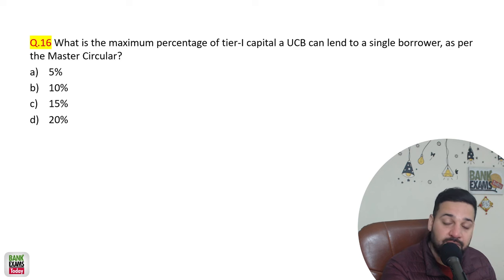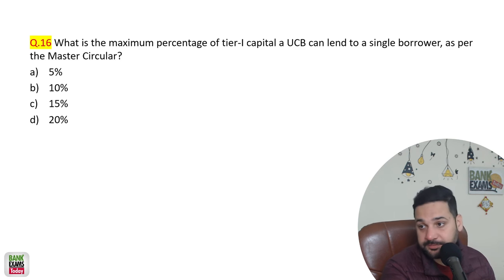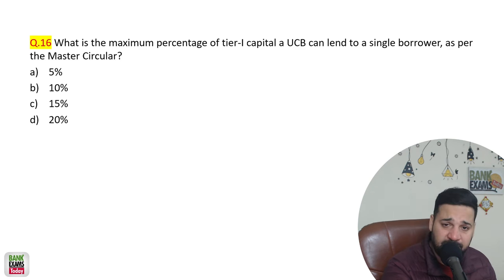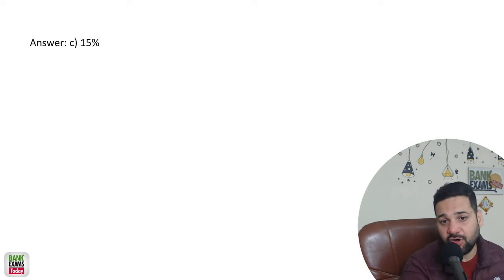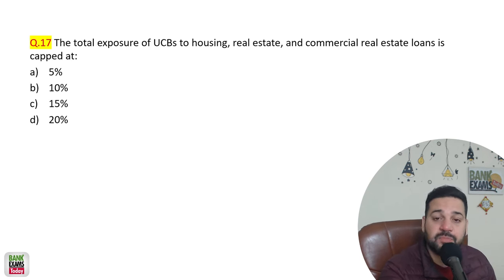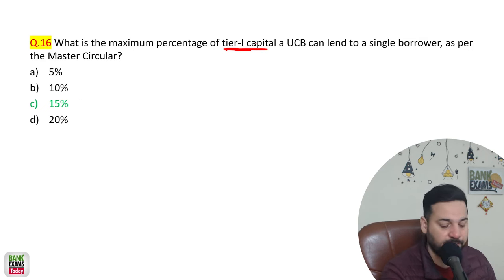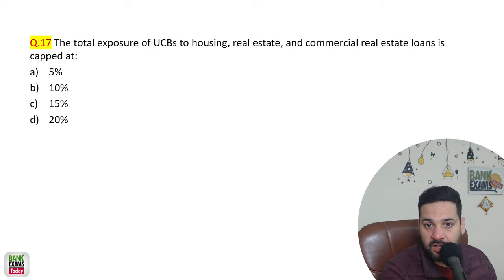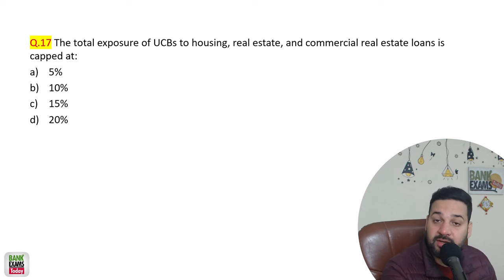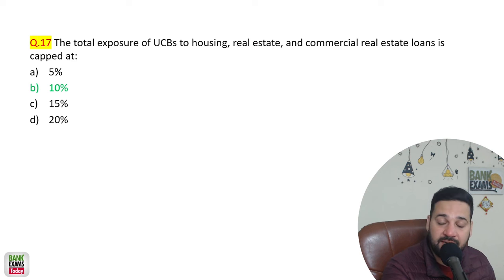What is the maximum percentage of Tier 1 capital an urban cooperative bank can lend to a single borrower as per the master circular? It is 15 percent of its Tier 1 capital. The total exposure of an urban cooperative bank to real estate and commercial real estate loans is capped at 10 percent.